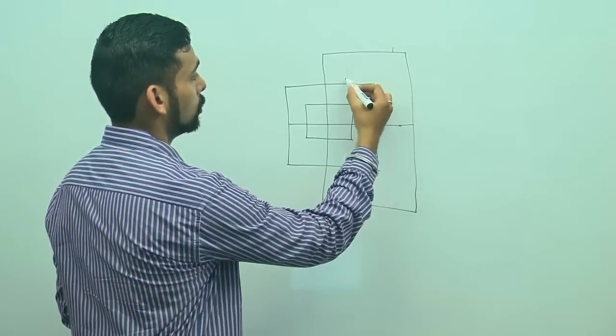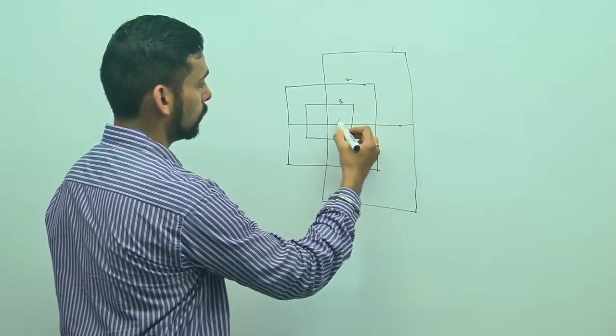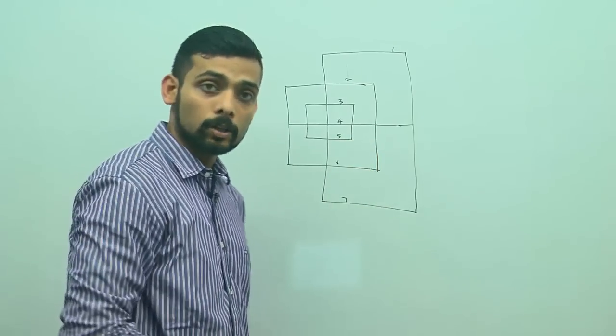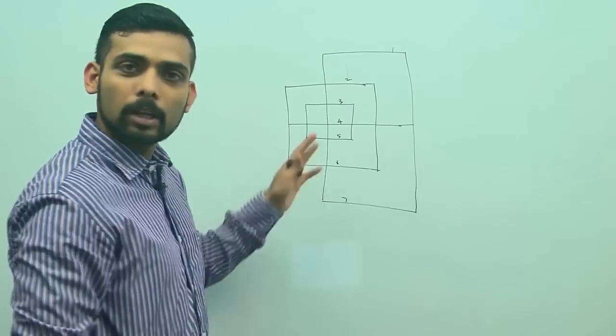Now if I am to determine the minimum number of lines required, let me just count the number of horizontal lines. So I have 1, 2, 3, 4, 5, 6, and 7 horizontal lines.